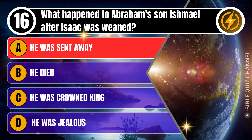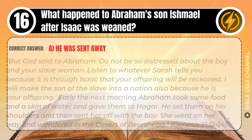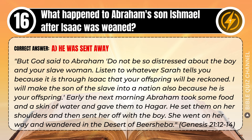Correct answer: A. He was sent away. Explaining the Bible — God said to Abraham, 'Do not be so distressed about the boy and your slave woman. Listen to whatever Sarah tells you, because it is through Isaac that your offspring will be reckoned. I will make the son of the slave into a nation also, because he is your offspring.' Early the next morning, Abraham took some food and a skin of water and gave them to Hagar, and sent her off with the boy. She wandered in the desert of Beersheba. Genesis, chapter 21, verse 12 to 14.